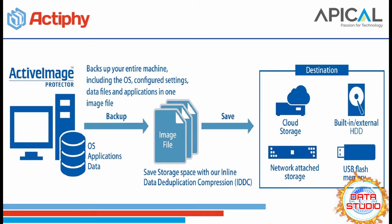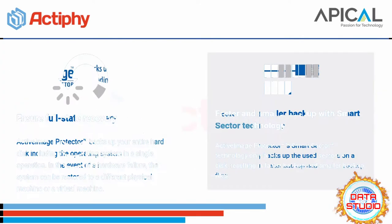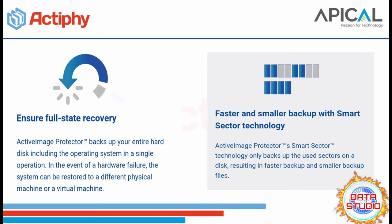Image-based backup — Active Image Protector backs up your entire machine including the OS settings, data files, and applications into a single image file. When disaster strikes, select a backup image to quickly restore for a fast and complete recovery. Active Image Protector backs up your entire hard disk including the operating system in a single operation.